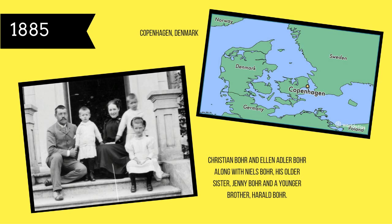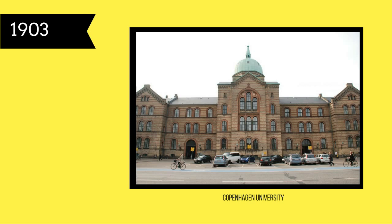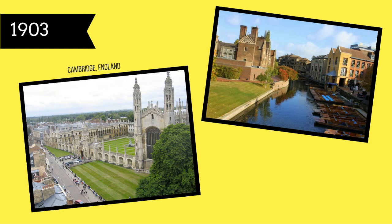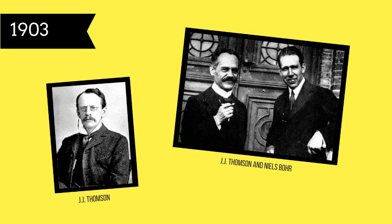In 1903, Bohr enrolled as an undergraduate at Copenhagen University. During the fall of the same year, Bohr travelled to Cambridge, England, where he was able to follow the Cavendish Laboratory work of scientist J.J. Thompson, a British physicist that discovered the electron in a series of experiments trying to study the nature of electric discharge. He also studied astronomy and mathematics, and then in 1911, Bohr received his master's and doctorate in physics.